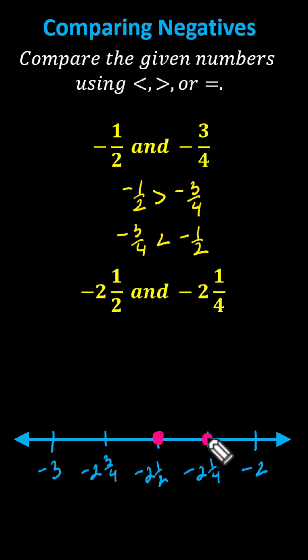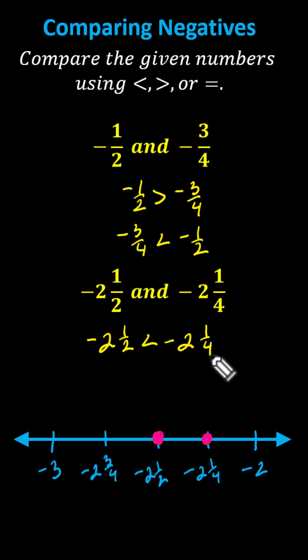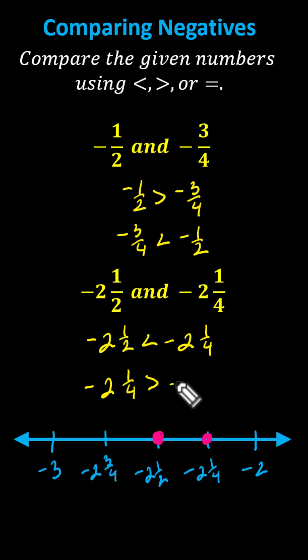Because negative two-and-a-half is to the left of negative two-and-one-fourth, we now know negative two-and-a-half is less than negative two-and-one-fourth. Or, as an equivalent inequality, because negative two-and-one-fourth is to the right of negative two-and-a-half, we can say negative two-and-one-fourth is greater than negative two-and-a-half. I hope you found this helpful.